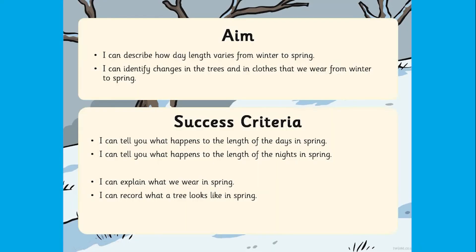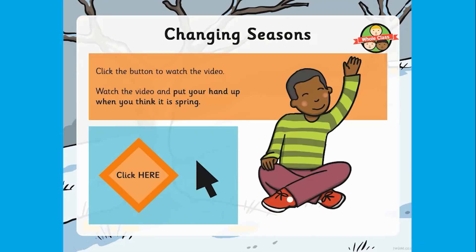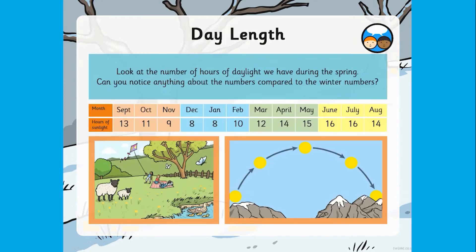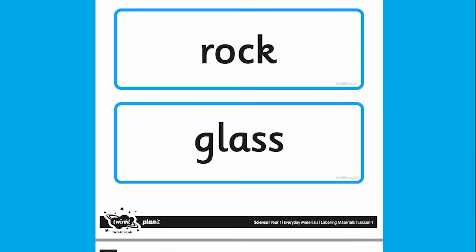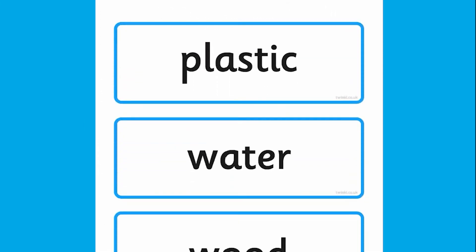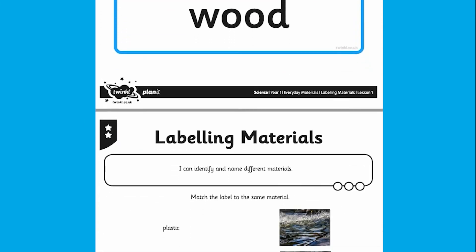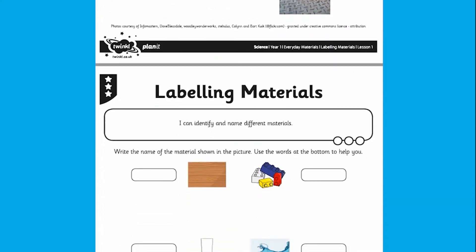The lesson presentation includes child-friendly aims and success criteria. Through interactive and informative slides, the children are guided through the learning. The work linked to the lesson plan is attached in the pack and is always differentiated, going from one star to the more tricky two and three star options. The success criteria grids available for each lesson give the children an opportunity to self-assess against the learning aim for the lesson.